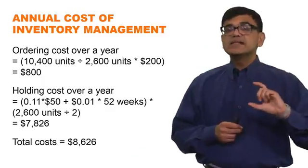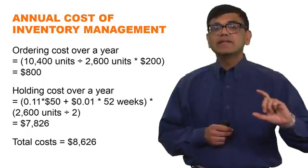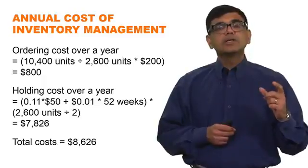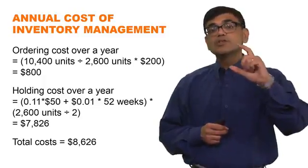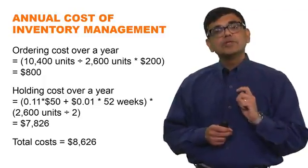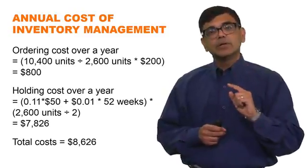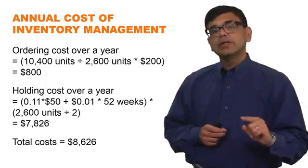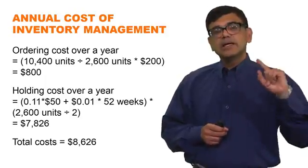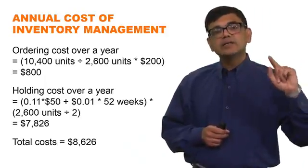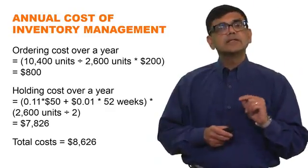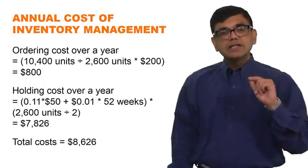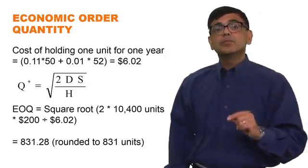From these numbers you can already sense that the 2,600-unit order quantity is far from the EOQ. When ordering close to EOQ, the ordering cost and holding cost over the year should be close to each other. Here they are far apart — $800 versus $7,826 — which tells you the order quantity will differ significantly from the EOQ. Let's compute what the EOQ actually is.